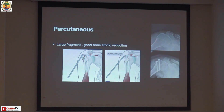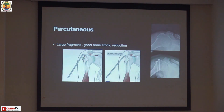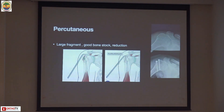For the percutaneous technique, the fragment must be large and there must be good bone stock. If the bone is paper-thin or just a sliver, a percutaneous technique will shatter the fragment. Cases must be well-selected. You can reduce the fragment using a skin hook, bone hook, or periosteal elevator to elevate and reduce it, temporarily fix it percutaneously, and then place cannulated cancellous screws.